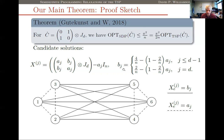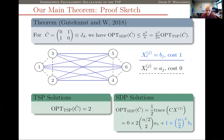Now we plug these values into the SDP constraints. For the objective function, the value of the SDP is something like (n²/4) · b_1, since b_1 applies to all the cost-one edges and there are roughly (n/2)² such edges. So what we should be trying to do is make b_1 as small as possible, which corresponds to making a_1 as large as possible.